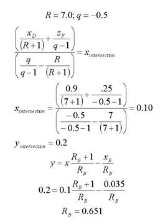Now that we know that point of intersection, we can substitute those into our equation for the lower operating line. Since X and Y are known, we can solve for the value of the boil-up ratio R sub B. In this case, that equals 0.651, and we'll use this value later on in the presentation.